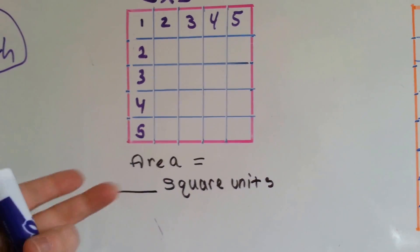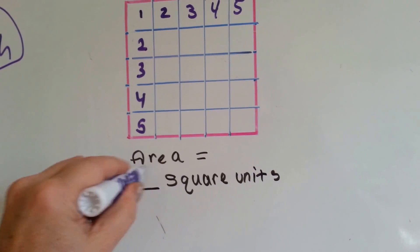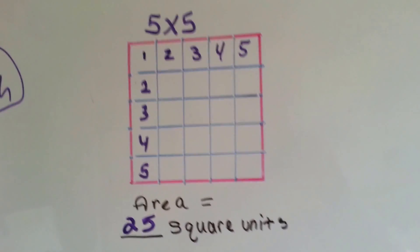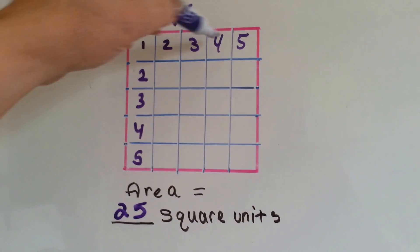5, 10, 15, 20, 25. So there's 25 square units here. Let's double check to see if we got it right.